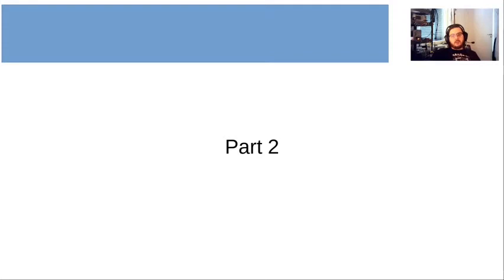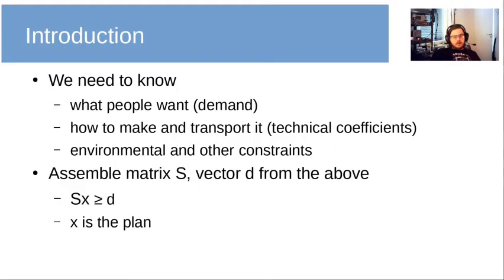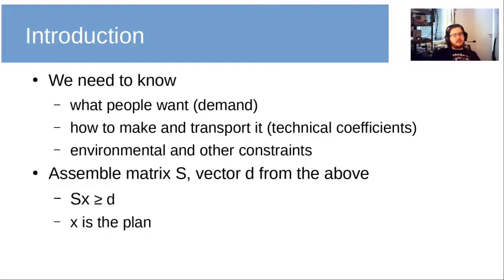Part two is all about 'how.' First of all, we need to know a couple of things: we need to know what people want, which is the vector of demand; we need to know how to make things and how to transport them, which are the technical coefficients; we also need to know the environmental constraints and any other constraints, which may come from the political system. From these we can assemble the system matrix S and a vector d, and then form the system of inequalities S·x ≥ d, where x is the plan.